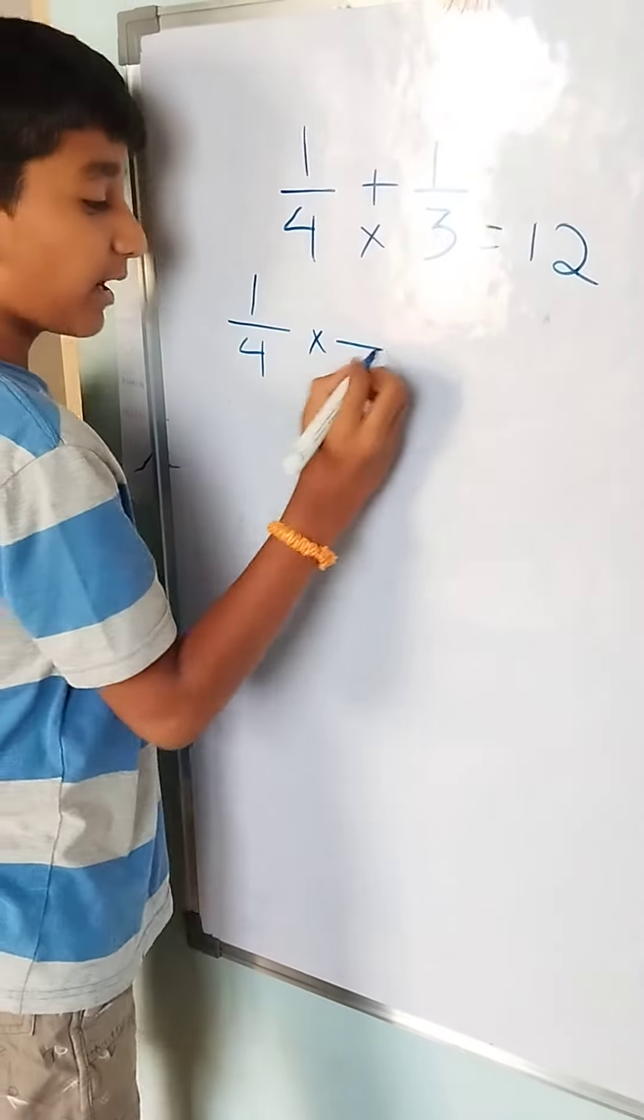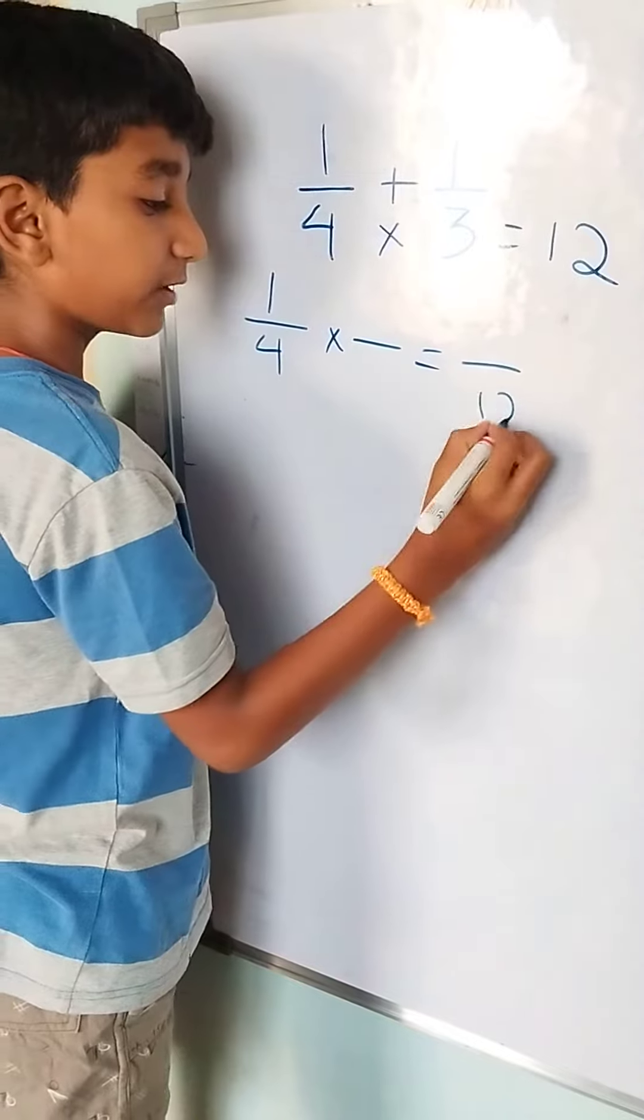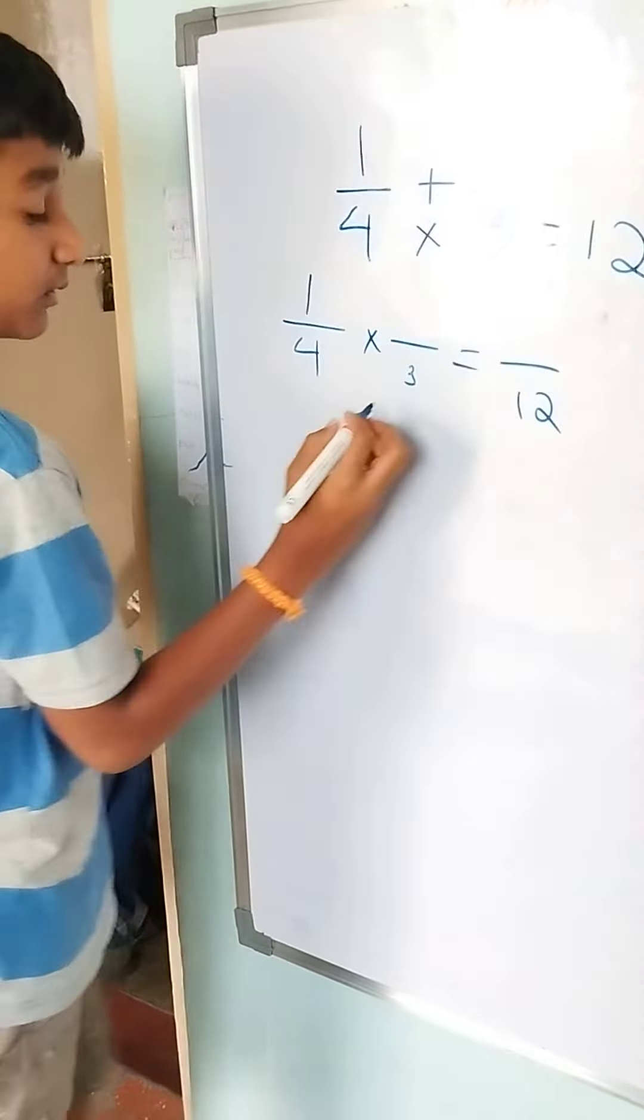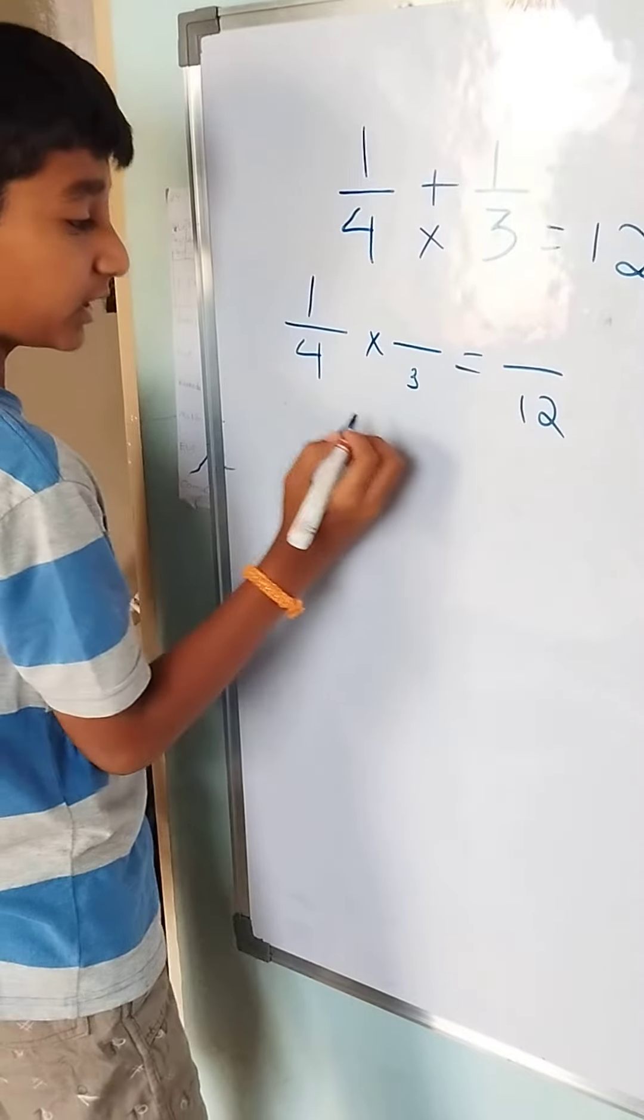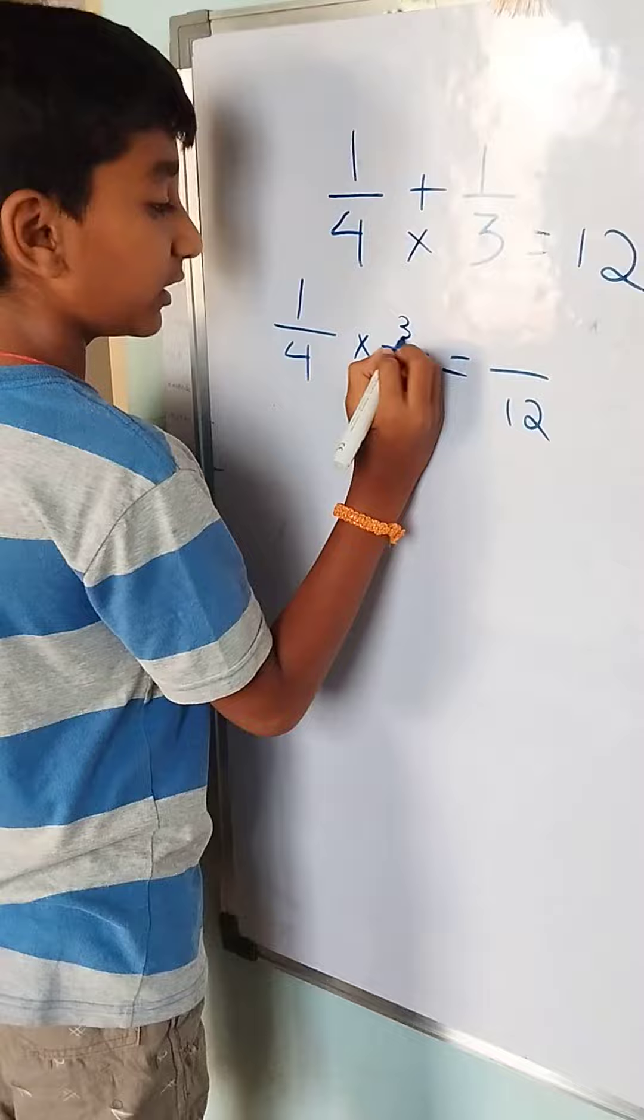We have to write a number over here to get 12. So we have to write over here 3. The number which we write over here when multiplying should be written over here also.